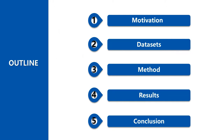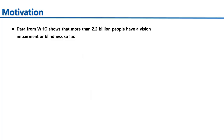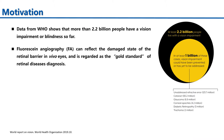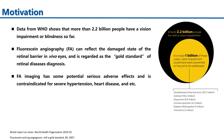First is motivation. Data from WHO shows that more than 2.2 billion people have a vision impairment or blindness so far. FA can reflect the damaged state of the retinal vasculature in vivo and is regarded as a gold standard of retinal disease diagnosis.